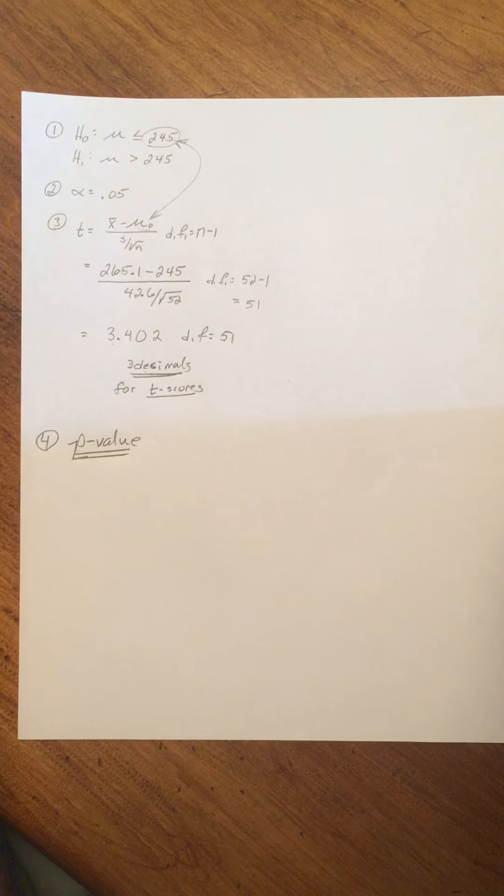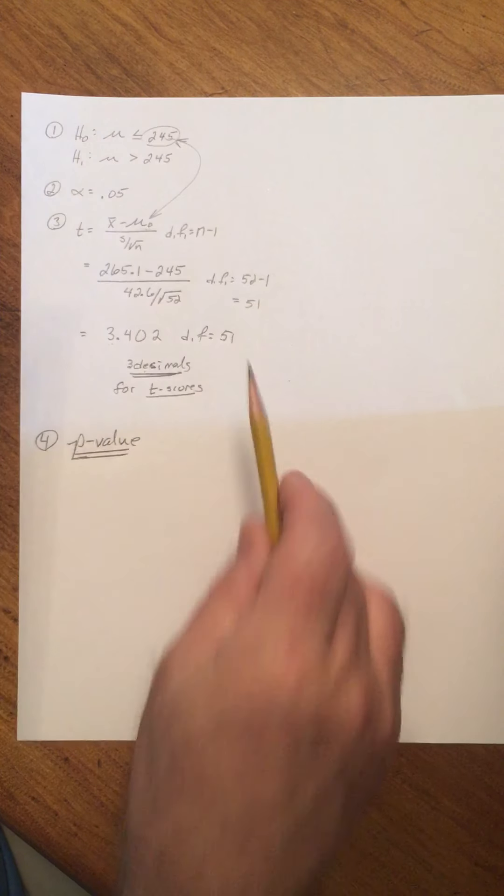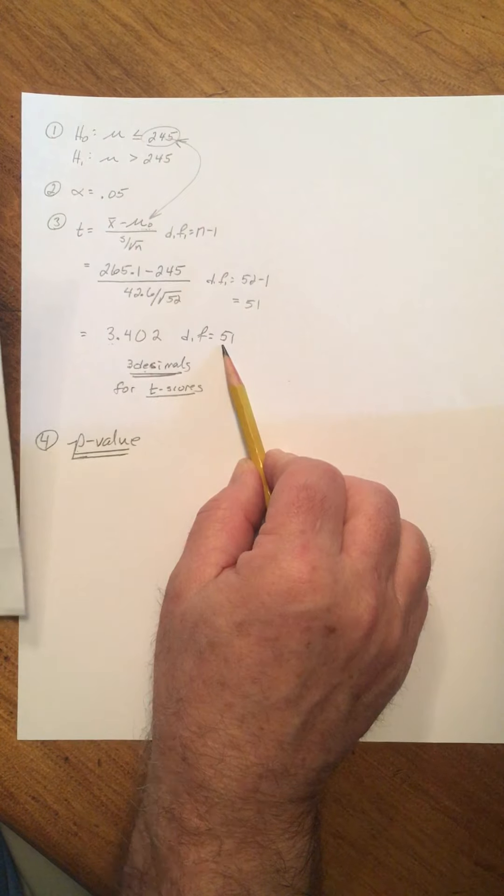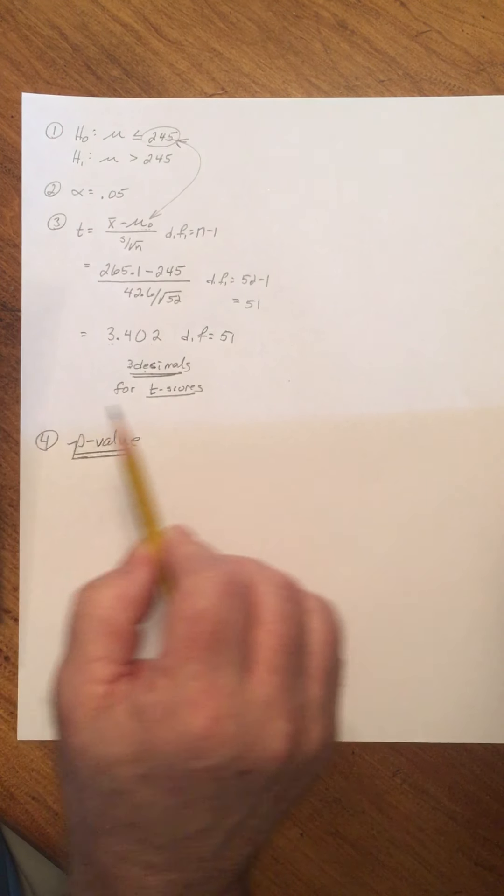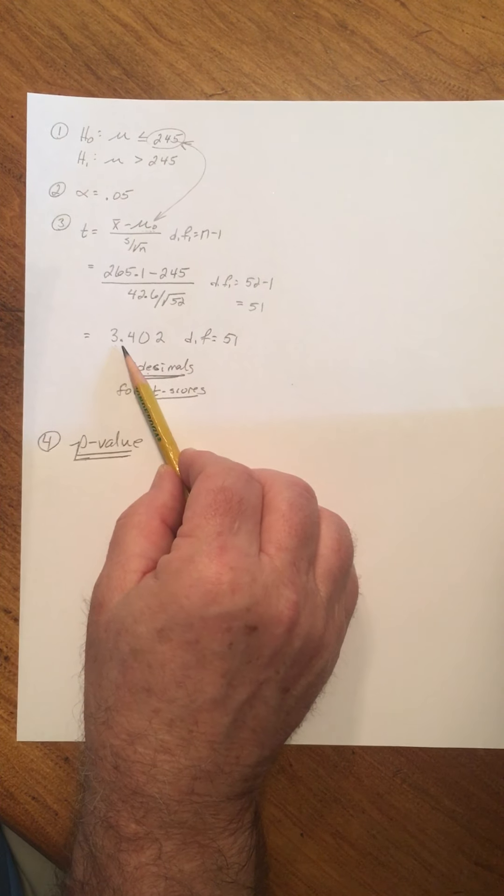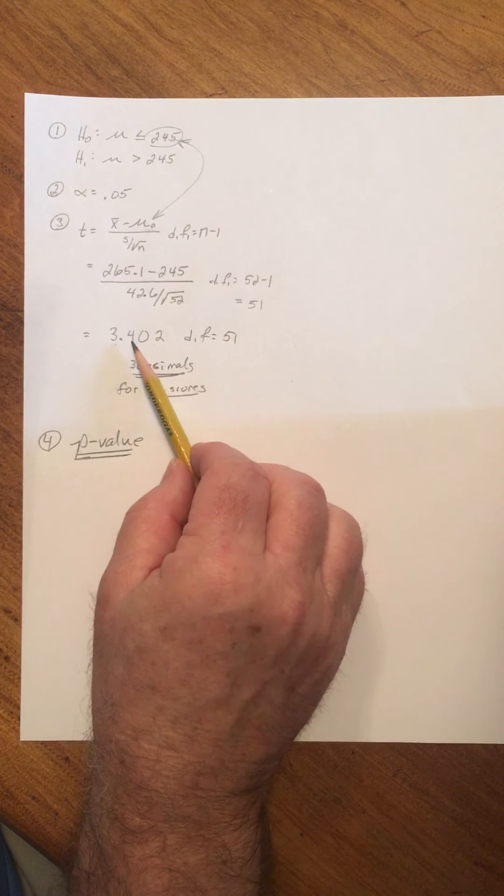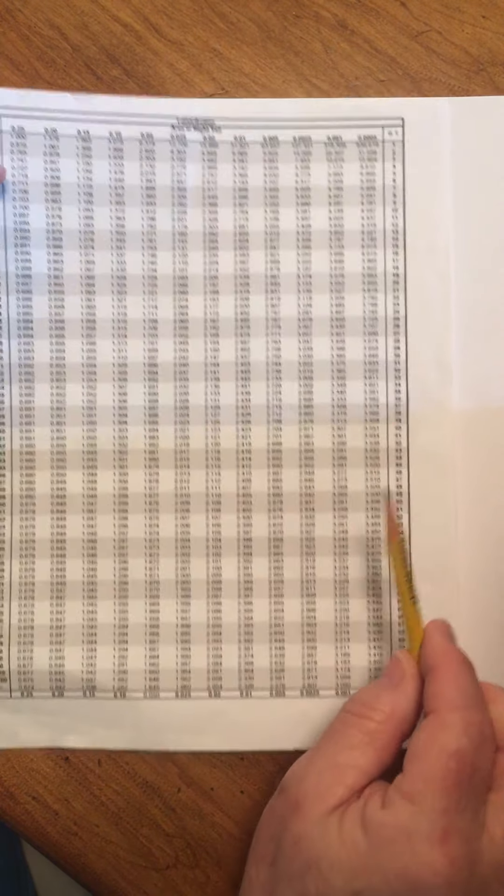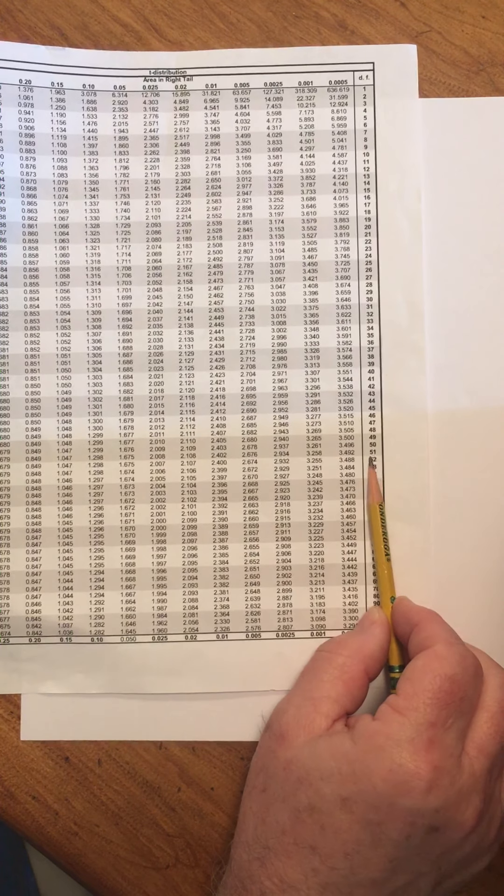For now, it suffices to say we need the t-table from before, and we're at 51 degrees of freedom. So everything we're doing in this problem is going to be in the 51 degrees of freedom row, and our value is 3.402. So this now is the procedure.